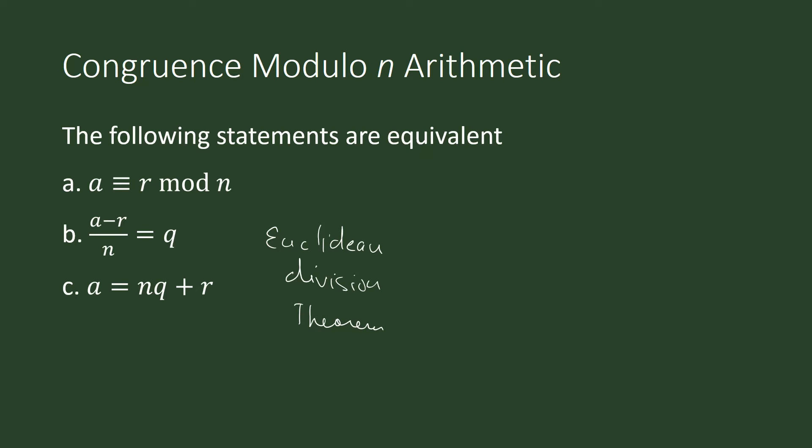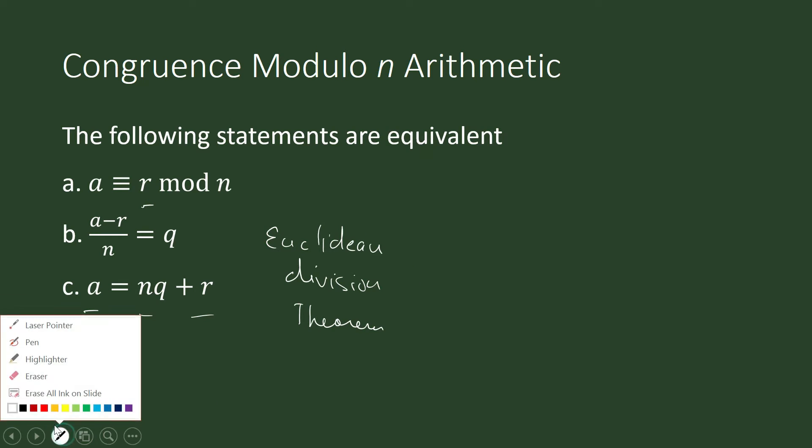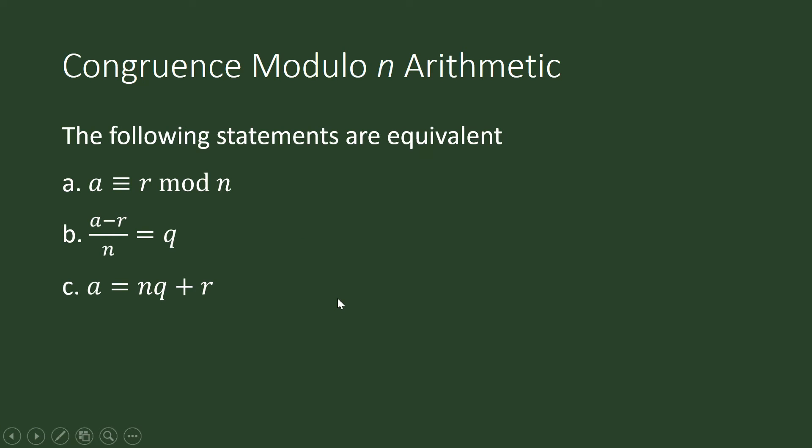This is also equivalent to your Euclidean Division Theorem, which means that if a is congruent to r modulo n, then a equals n times q plus r. For most students, it is convenient to look at r as the remainder when a is divided by n.